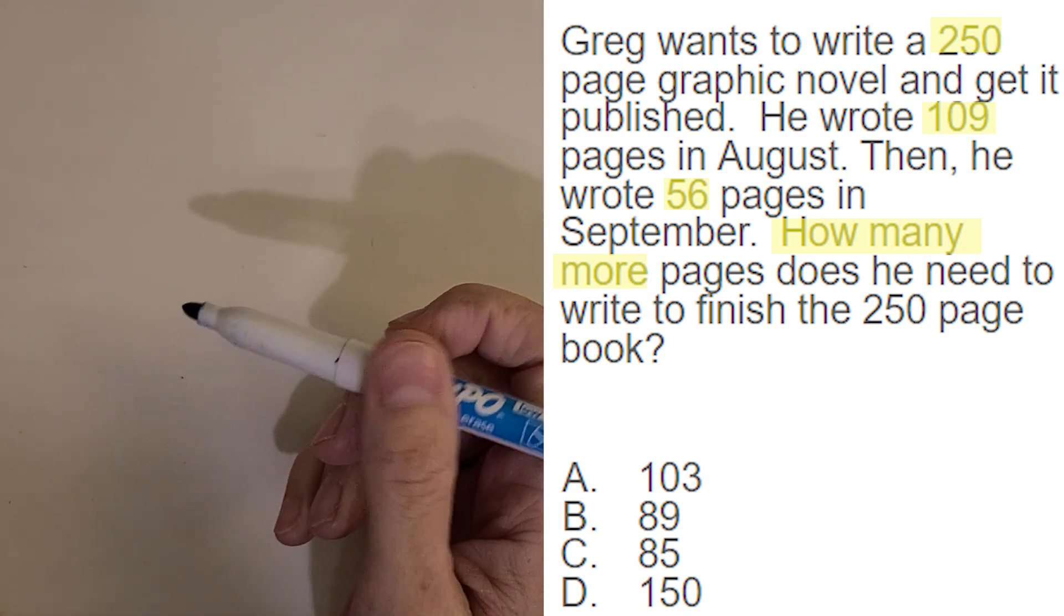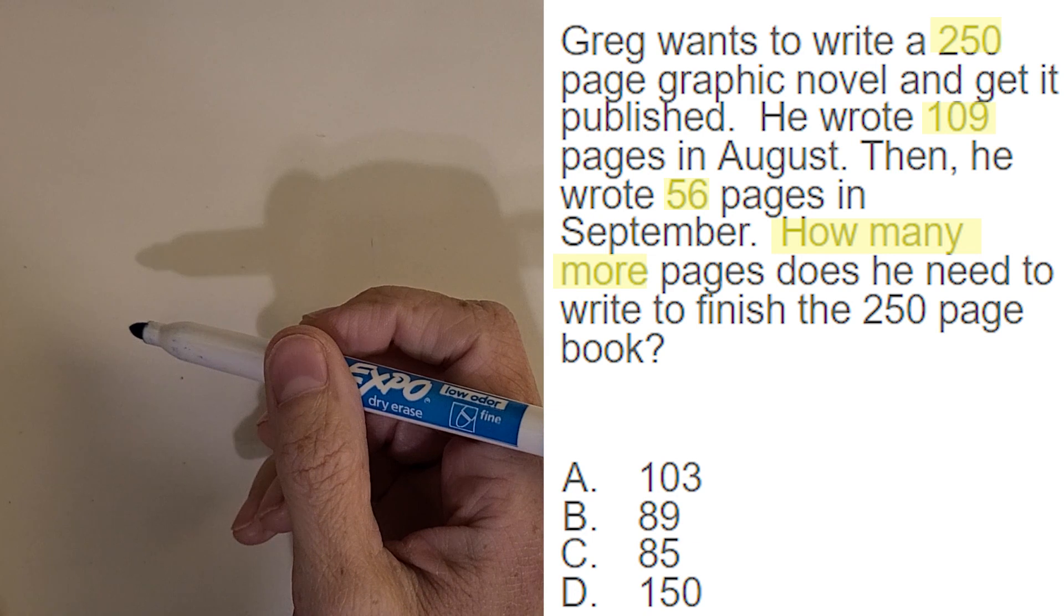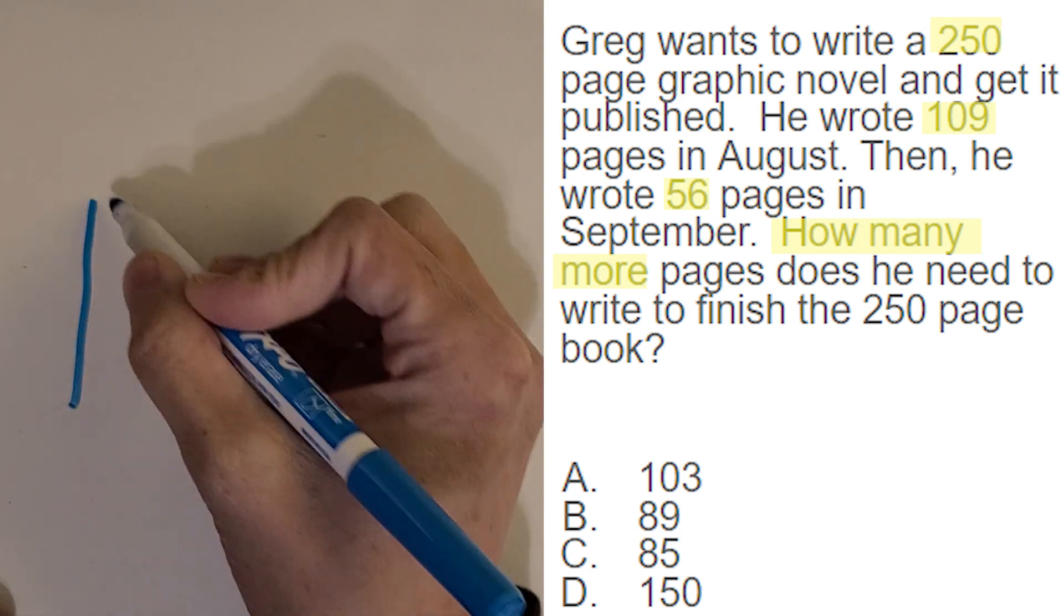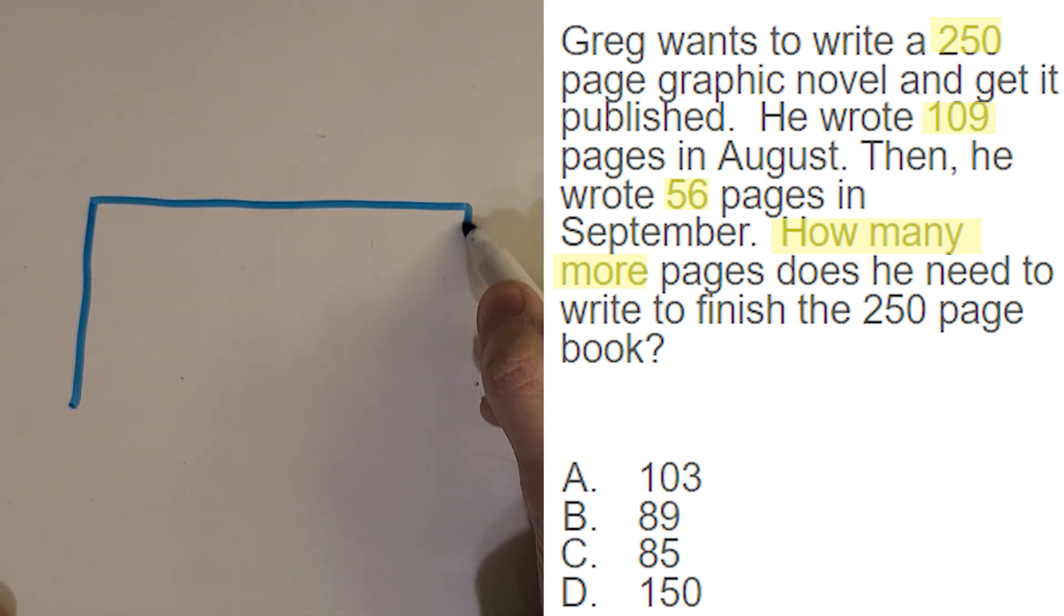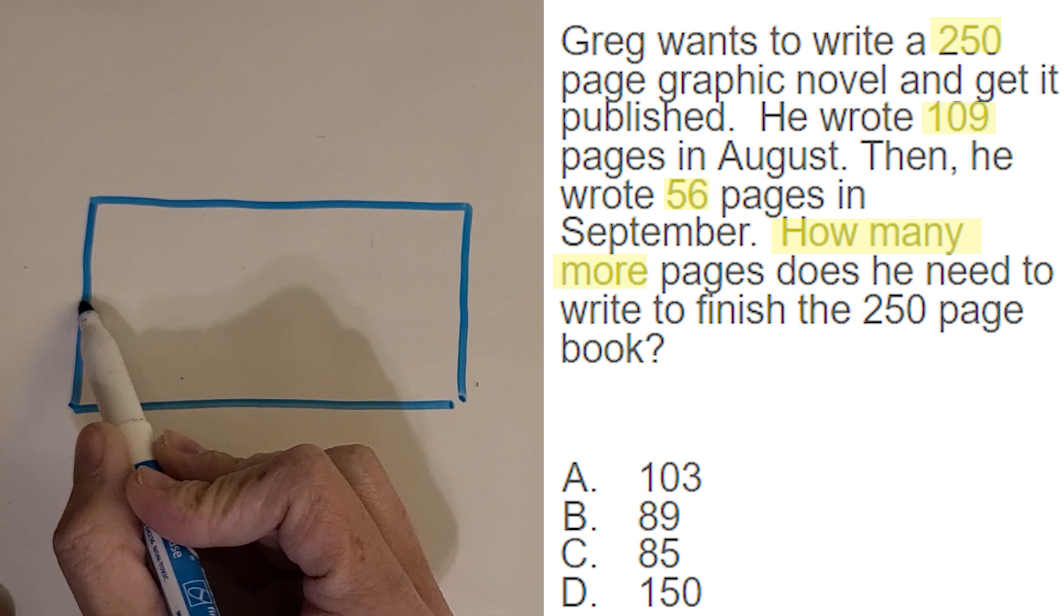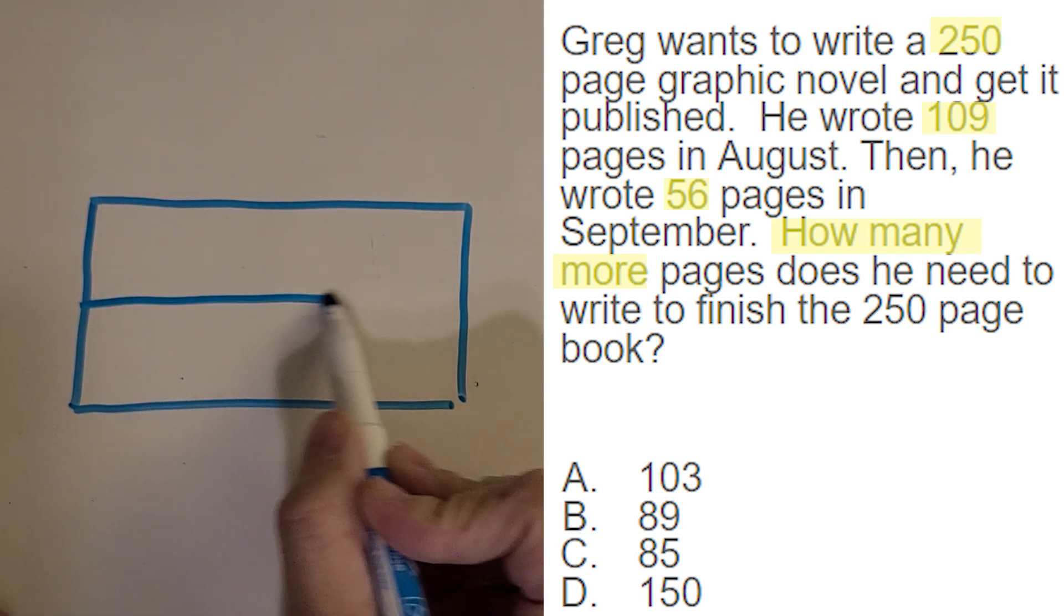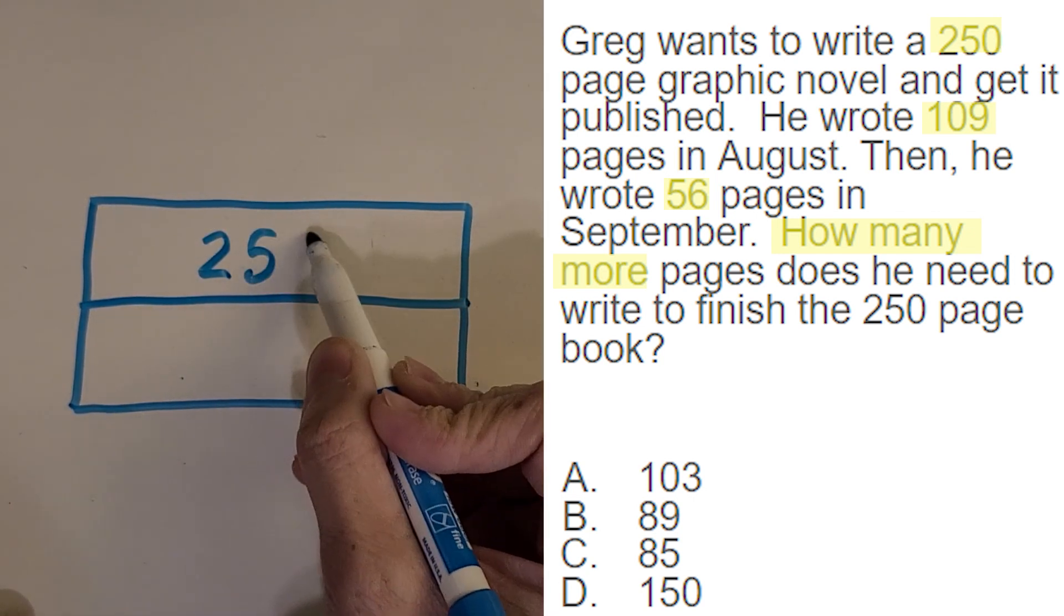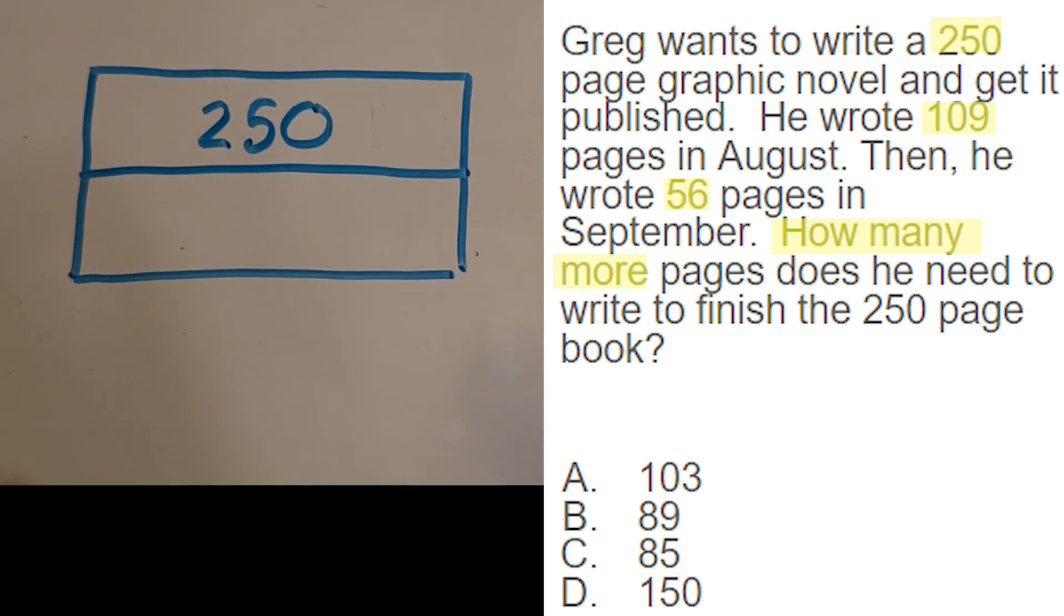Okay, so I think when it comes to a problem like this, and I know the total pages of his book, that always makes me think of a strip diagram. So I like to make a rectangle, split it in half like that. In this problem, I know that the total is 250 pages. And then I know that he wrote some in August. I think about how many parts I need next. He wrote some in August, some in September, and then he's got some that he still needs to write. So I'm going to make three little sections.